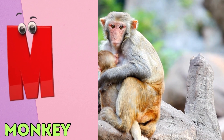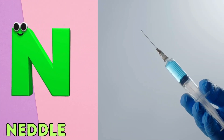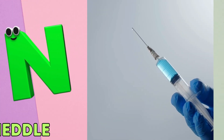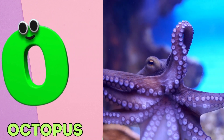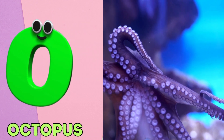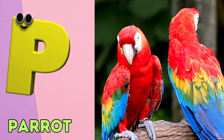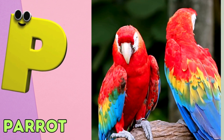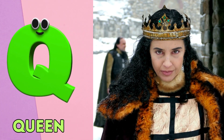M is for Monkey. Ma, Monkey. N is for Needle. Na, Needle. O is for Octopus. A, Octopus. P is for Parrot. Pa, Parrot.